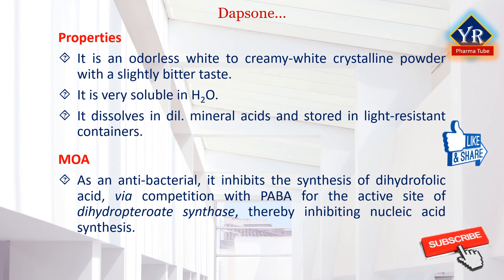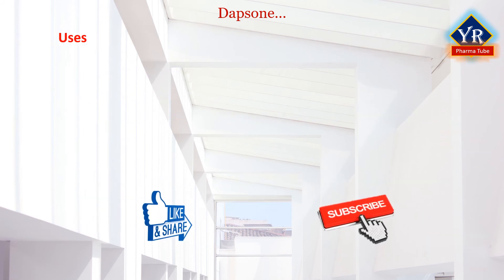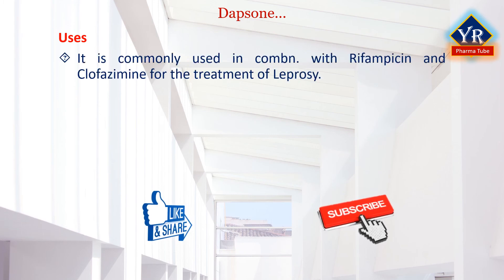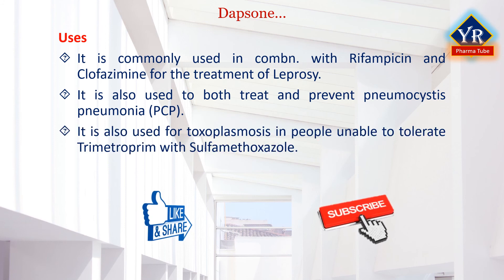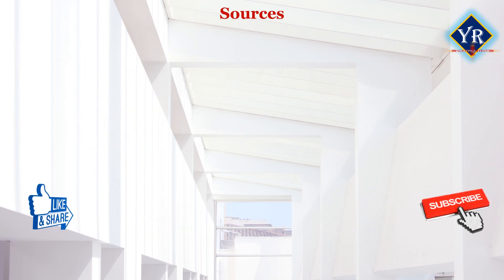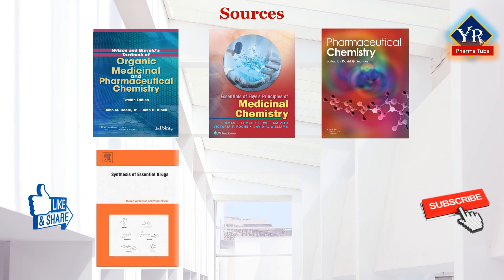Though structurally distinct from Dapsone, the sulfonamide group of antibacterial drugs also work in this way. Dapsone is commonly used in combination with rifampicin and clofazimine for the treatment of leprosy. It is also used to both treat and prevent Pneumocystis pneumonia. It is also used for toxoplasmosis in people unable to tolerate trimethoprim with sulfamethoxazole. This is the list of references followed for the lesson.